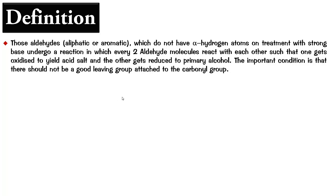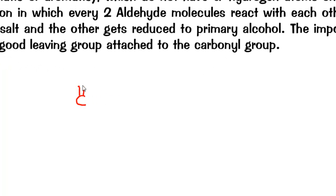This is the aldehyde group, the functional group, the carbonyl carbon, the hydrogen attached. And the carbon that is attached to the functional group, that's called alpha carbon. This is the alpha carbon. And if there are any hydrogens attached here, these are called alpha hydrogens.